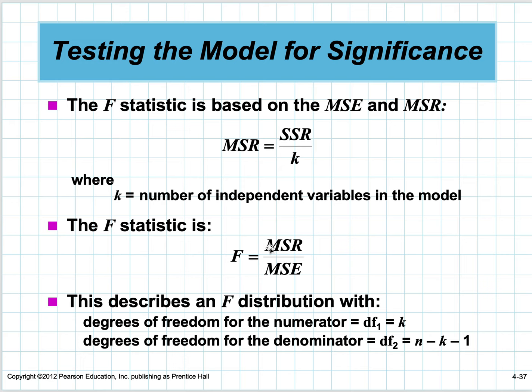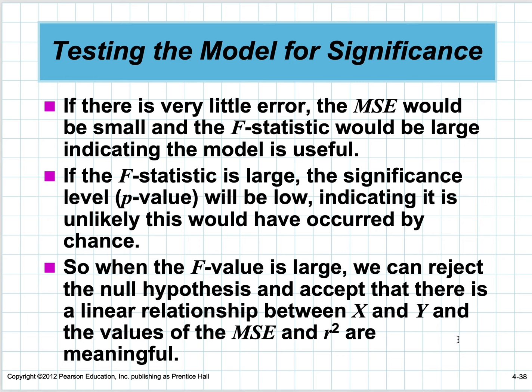The F-statistic has two degrees of freedom. One is k, the number of independent variables—for Triple A that's one. The second degree of freedom for the denominator is n minus k minus 1, so six minus one minus one equals four. If there's very little error, the MSE would be small and the F-statistic would be large, indicating the model is useful. If the F-statistic is large, the p-value will be low, indicating it's unlikely this would have occurred by chance.